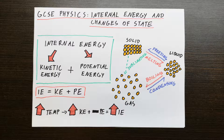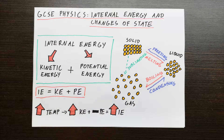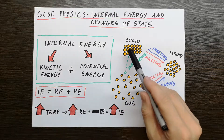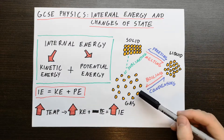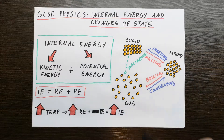The important thing to consider here is that the mass of the particle is always conserved throughout the change of state. The mass stays conserved at all times, as long as we don't lose some particles. This solid has the same number of particles as this liquid, which has the same number as this gas. Therefore, the mass stays the same — this solid will weigh the same as this liquid and this gas. That's very important.